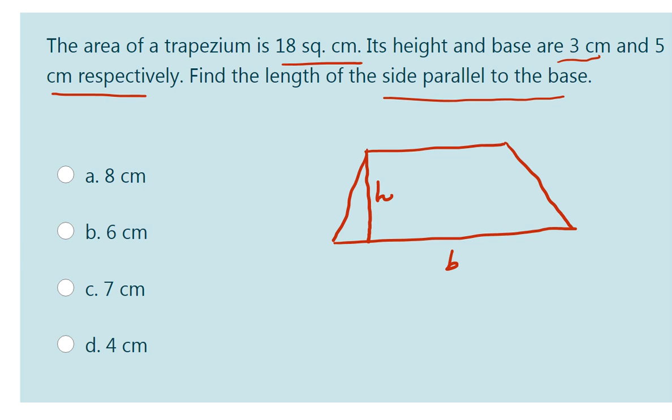If you assume this one as B1, then assume this one as B2. So the formula for area of the trapezium is half into H into B1 base plus side parallel to the base B2.